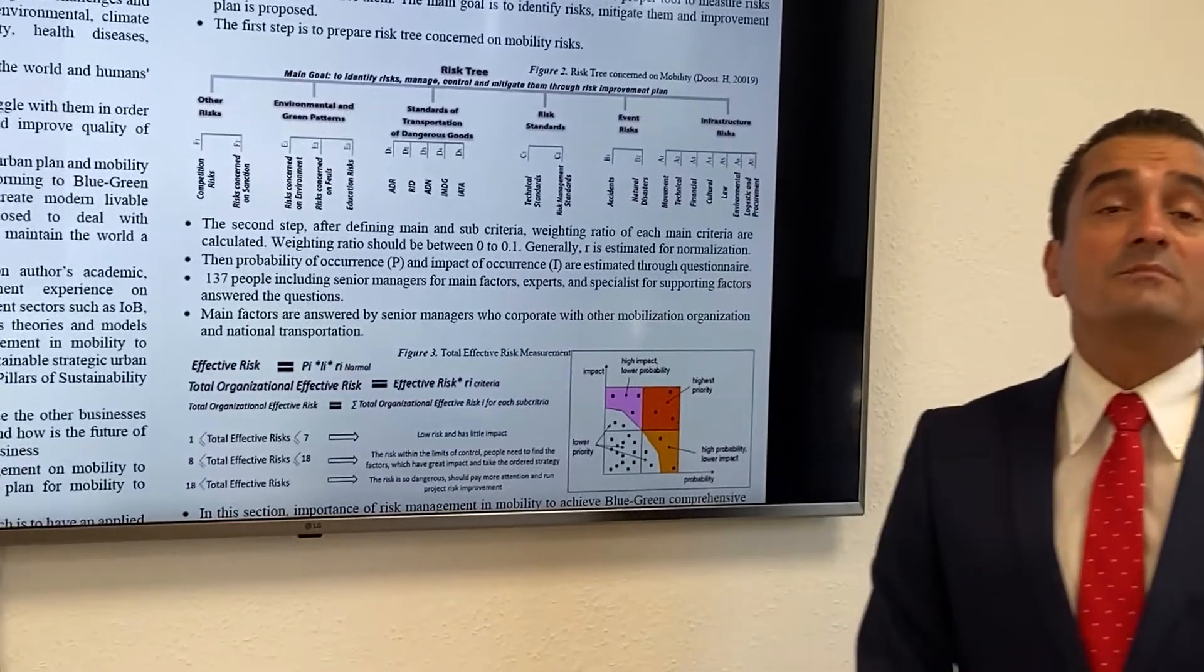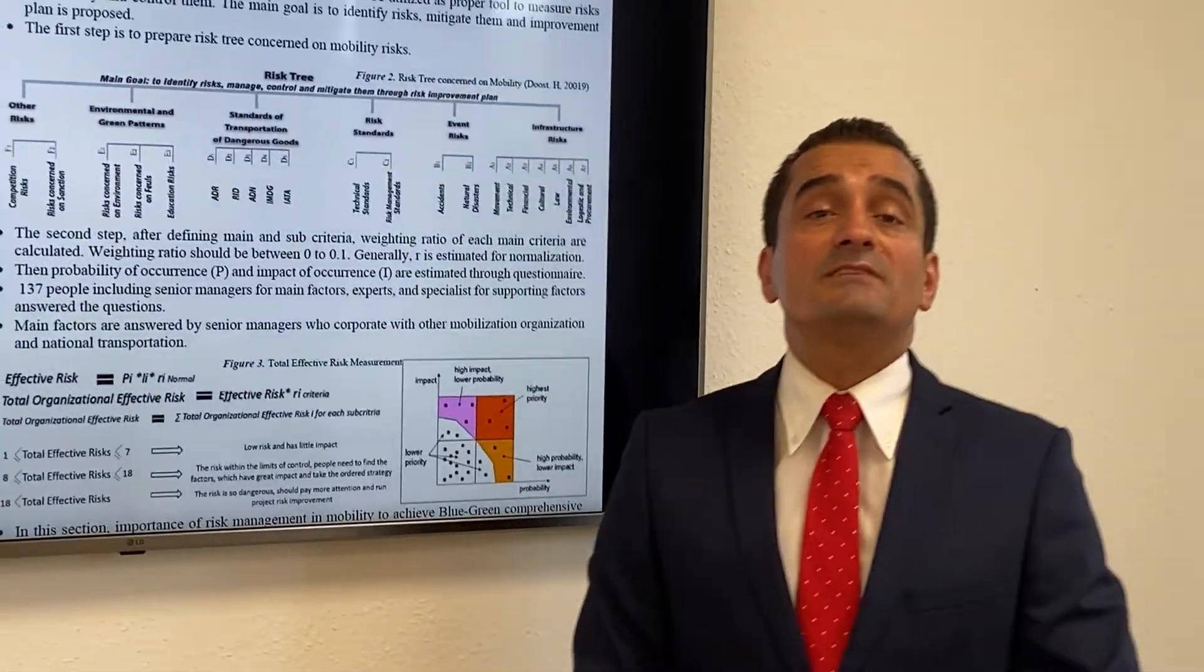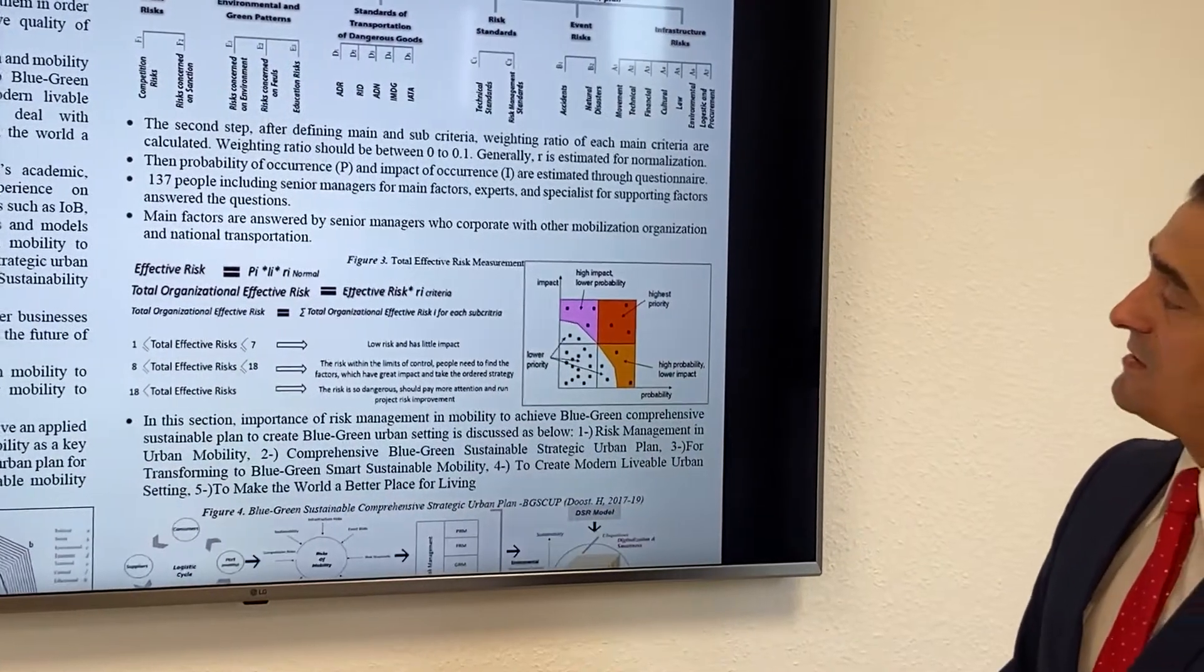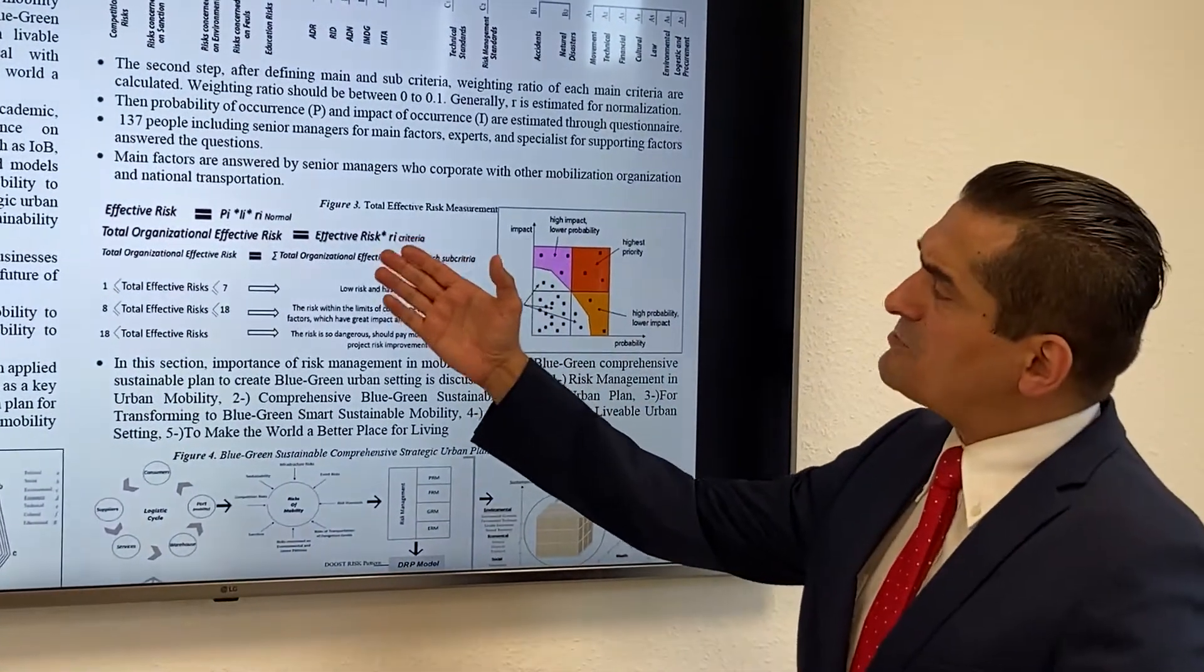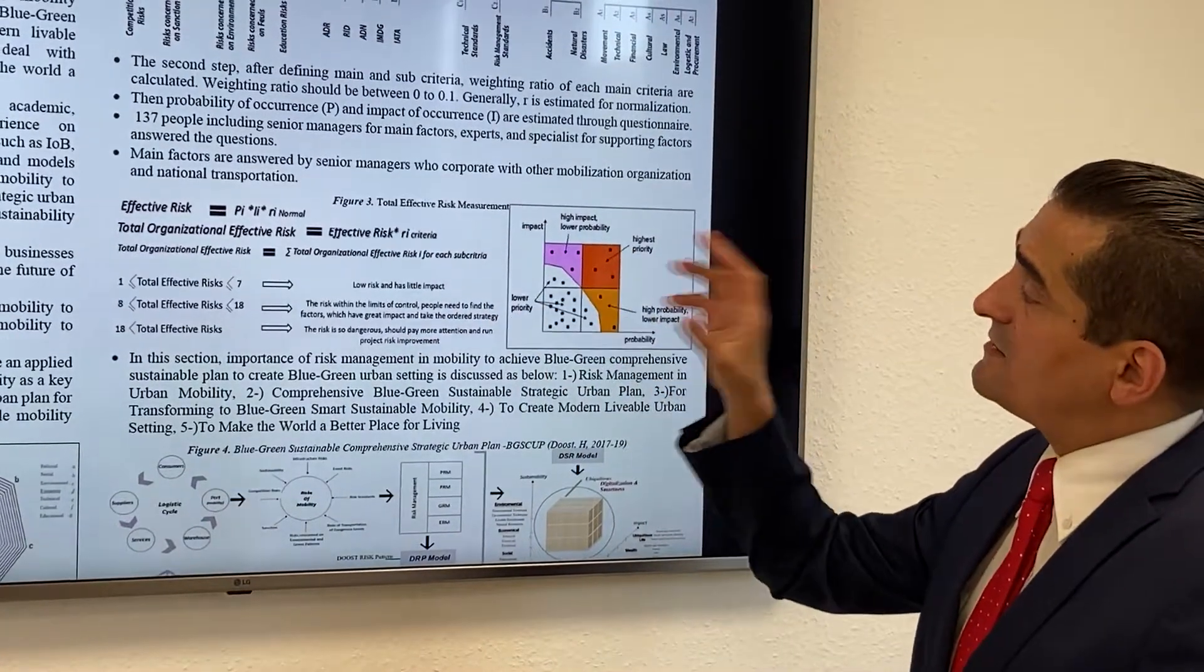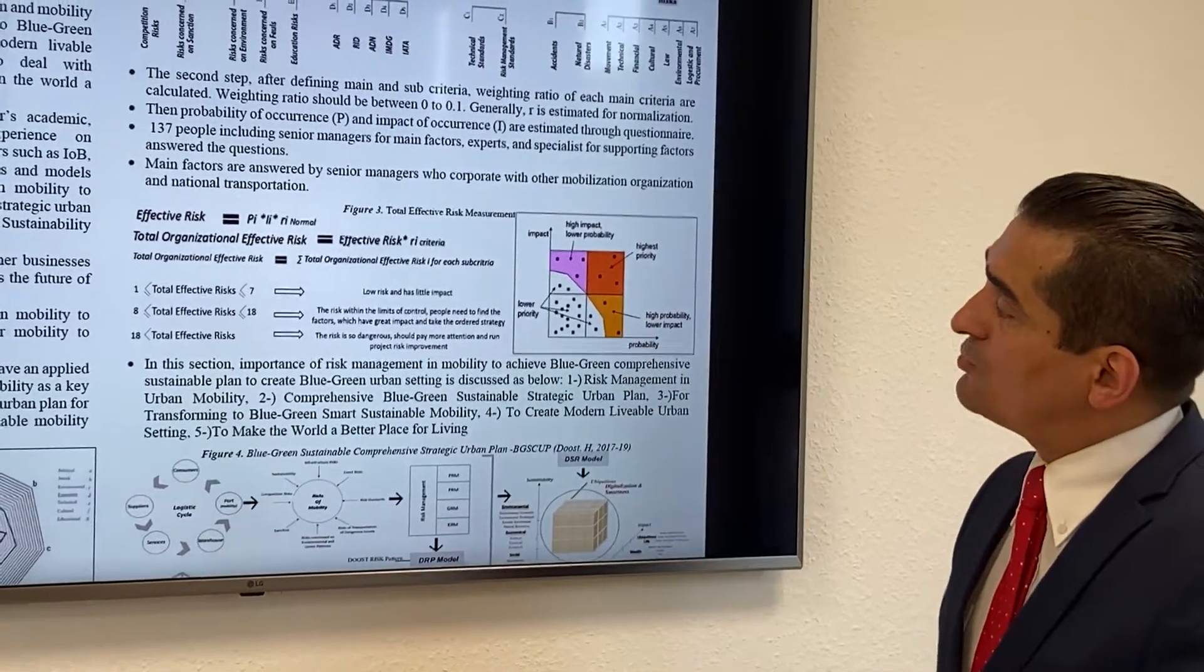We got responses from 137 people in the field of mobility. We did the risk mitigation management and measurements. Risk equals probability times impact times normalized ratio.